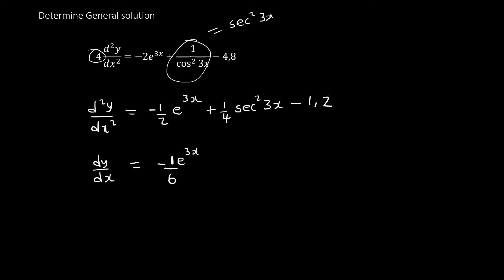Next, integrating sec squared: from the table, the integral of sec squared is tan — not tan squared. So this gives tan(3x) over 3, and with the 1 over 4 already there, that makes 1 over 12. Then 1.2 is just a constant so we get 1.2x, plus c because we are integrating.